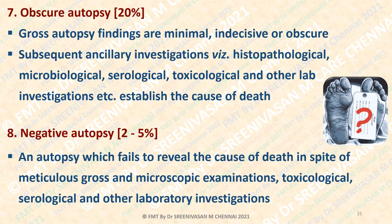The seventh type is obscure autopsy, which accounts for about 20% of medical-legal autopsies in India. As the name suggests, gross examination does not show any definite findings regarding the cause of death — with gross external and internal examination, the autopsy surgeon cannot make out any specific diagnosis. However, subsequent ancillary investigations like histopathological, microbiological, serological, toxicological, and other lab investigations will establish the cause of death. Such autopsies are called obscure autopsies — post-mortem findings are very minimal or obscure, but ancillary investigations establish the cause of death.